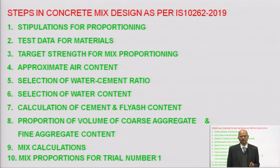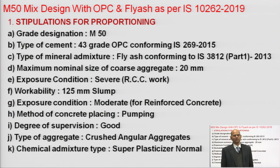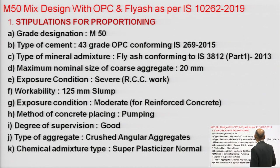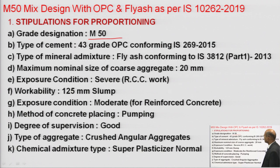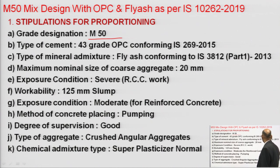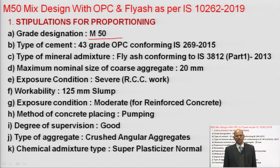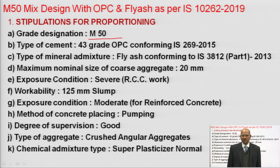We will be completing in this 25-minute lecture the whole design. The grade designation given: in this particular example I have taken M50 grade concrete, type of cement is 43 grade OPC conforming to IS 269:2015, and type of mineral admixture is fly ash conforming to IS 3812 Part 1:2013. Maximum nominal size of aggregate is 20 mm. Exposure condition is severe for RCC work, and workability is 125 mm for pumping category.